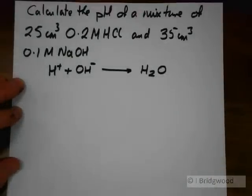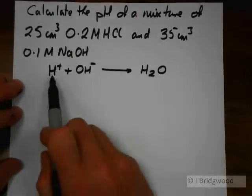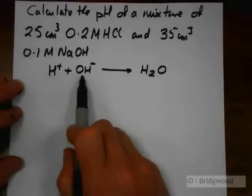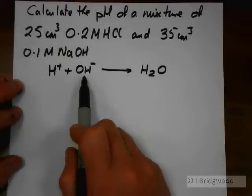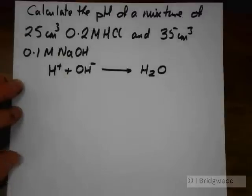So what we need to do is to find the amount of hydrogen ions present, the amount of hydroxide ions present, find which one is in excess and from that determine the concentration of hydrogen ions and thus the pH.